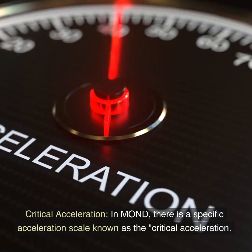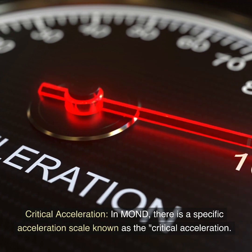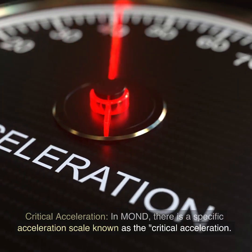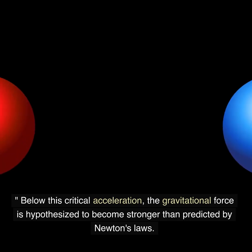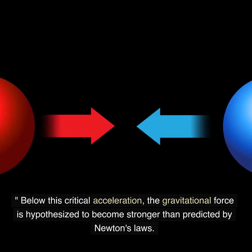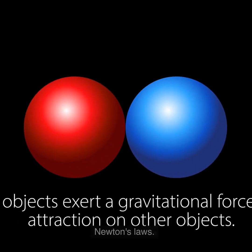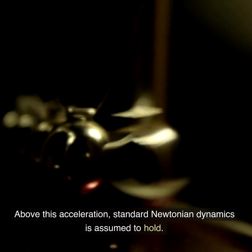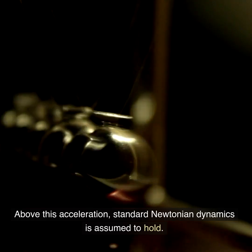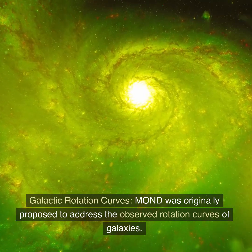Critical acceleration: in MOND, there is a specific acceleration scale known as the critical acceleration. Below this critical acceleration, the gravitational force is hypothesized to become stronger than predicted by Newton's laws. Above this acceleration, standard Newtonian dynamics is assumed to hold.